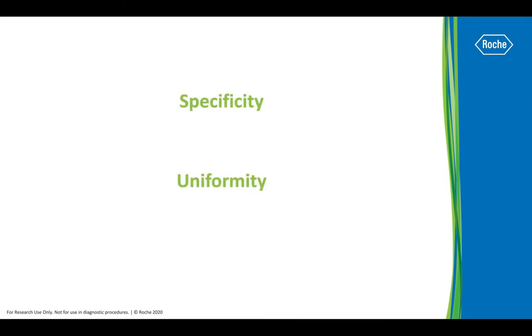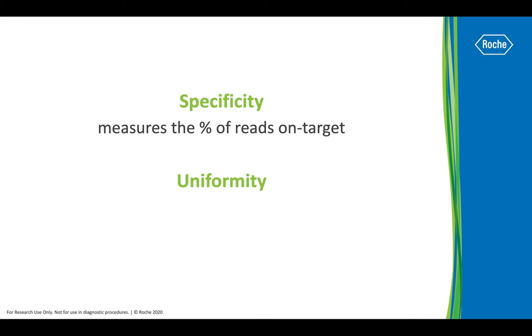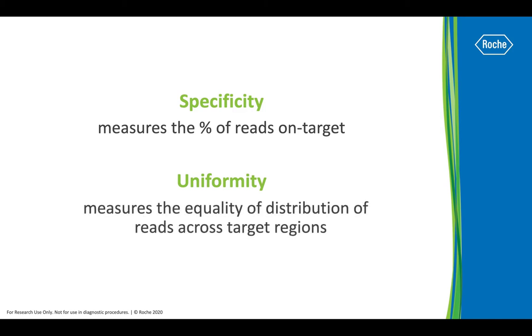There are two important, closely related metrics to consider when examining sequencing data following target enrichment: specificity and uniformity. Specificity is the percent of reads on target, and optimizing for specificity ensures that sequencing reads are not wasted on off-target regions. However, that's not enough — you also need to ensure that the on-target reads are aligned evenly across all targets. That's uniformity.